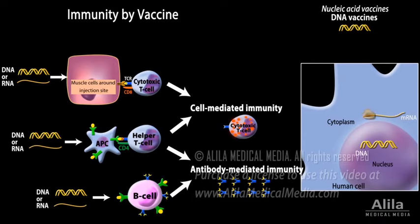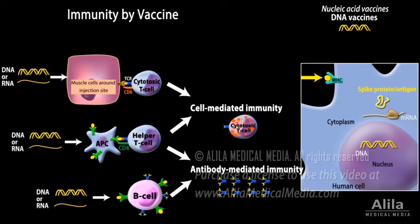The mRNA is translated into viral spike protein in the cytoplasm. The protein is then displayed on the cell's surface, just like with other types of vaccines.